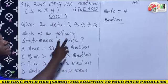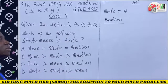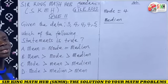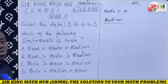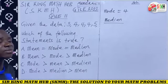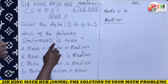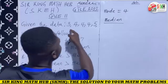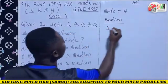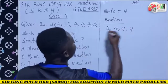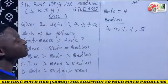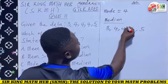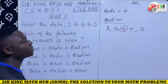We can arrange the data in ascending order from least to highest, or descending order from highest to least. I prefer ascending order. So arranging the data: 3, 4, 4, 4, 5. The middle number is 4, so the median is 4.